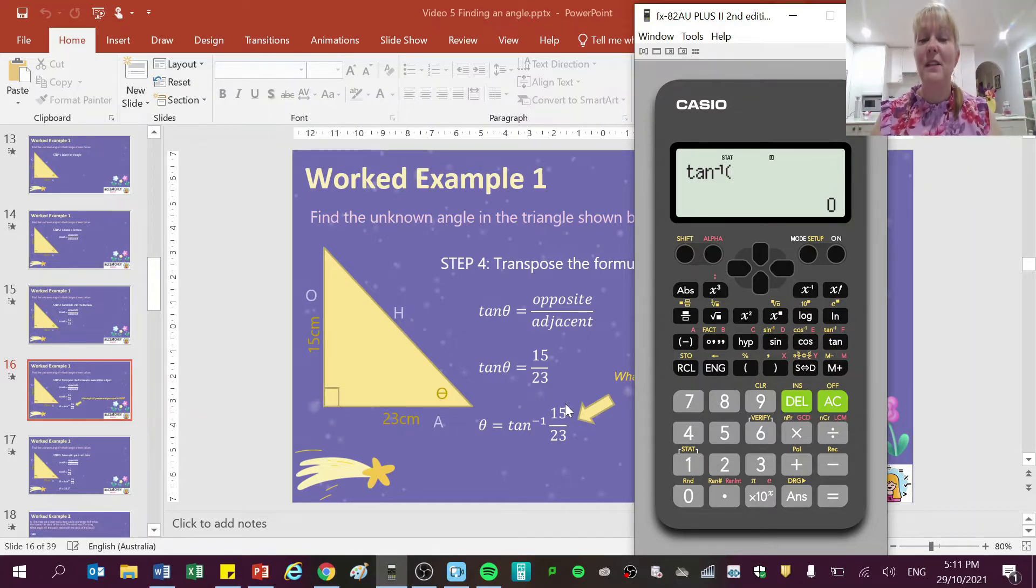And then I'm simply going to put this fraction, which is my ratio of my sides, 15 divided by 23, into the calculator, and press the equals button. It is that easy. You're going to love finding angles using trigonometry.